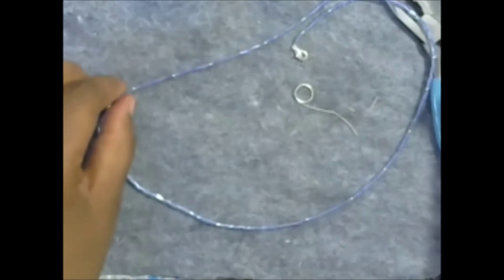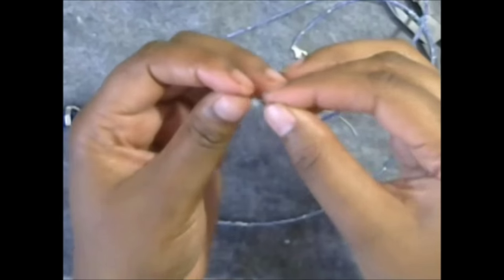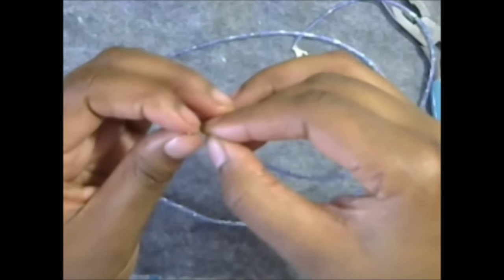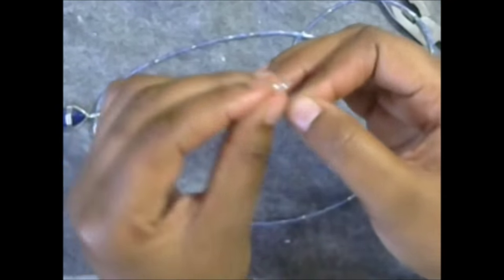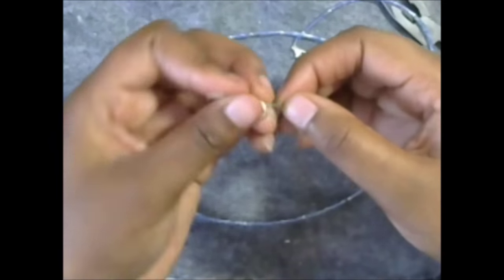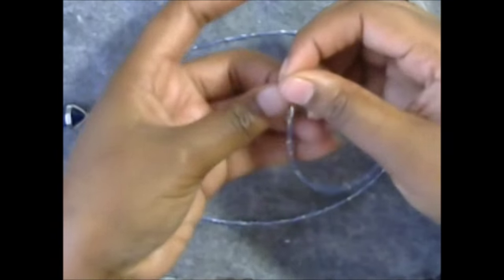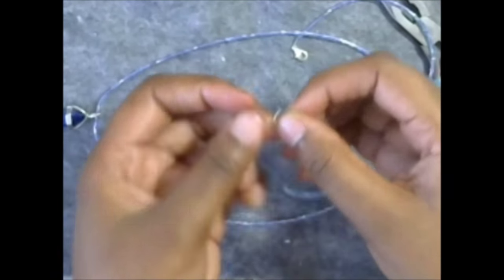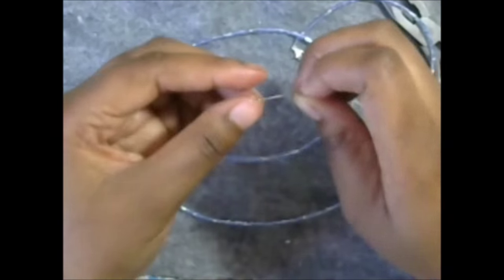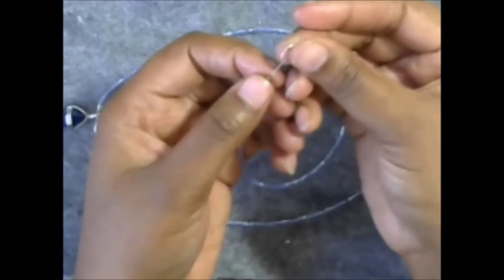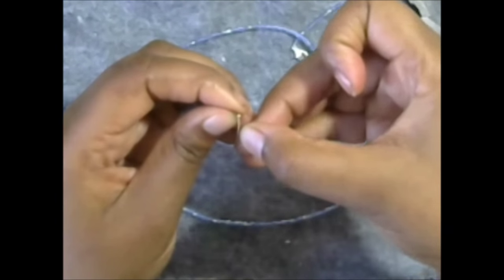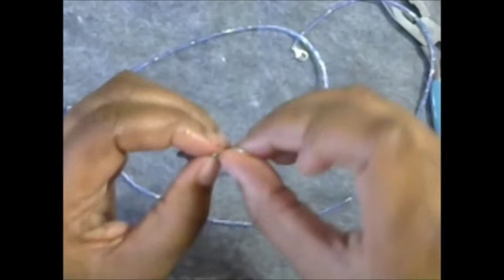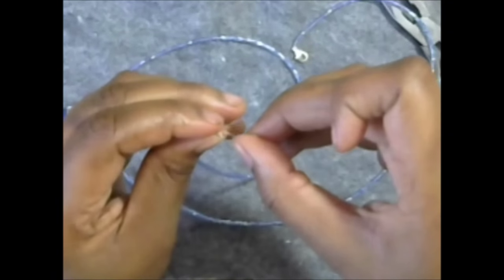So I'm going to take the crimp bead. Again, this is the other end. Just like that. And I'm going to go ahead and put on my jump ring. And then I'm going to take this. And that's just so that I'll have a place to put the lobster clasp. And I'm going to, again, take the end. This end right here. And I'm going to put it through the crimp bead. So the crimp bead has a hole in it.